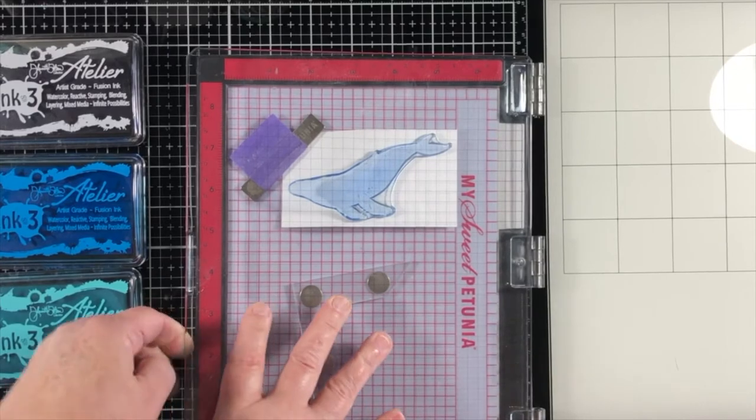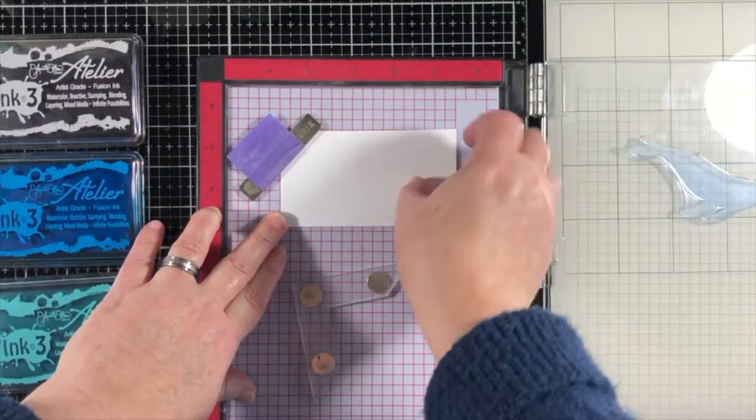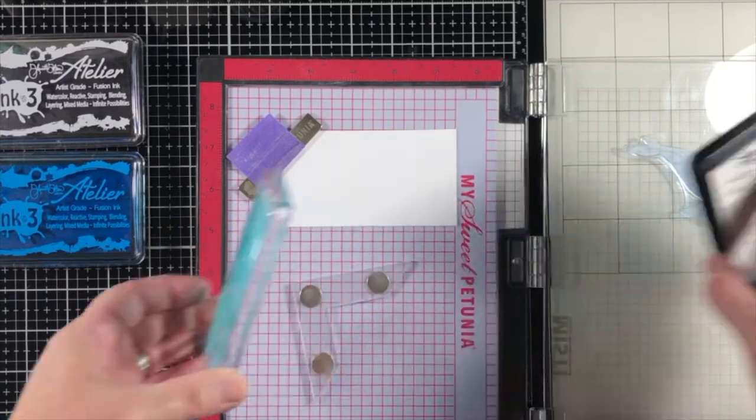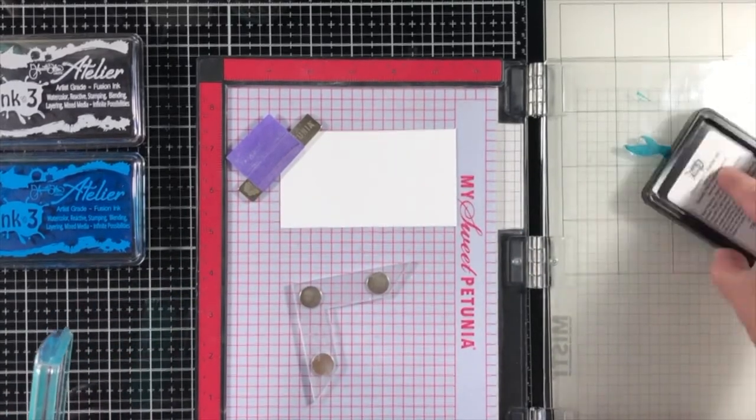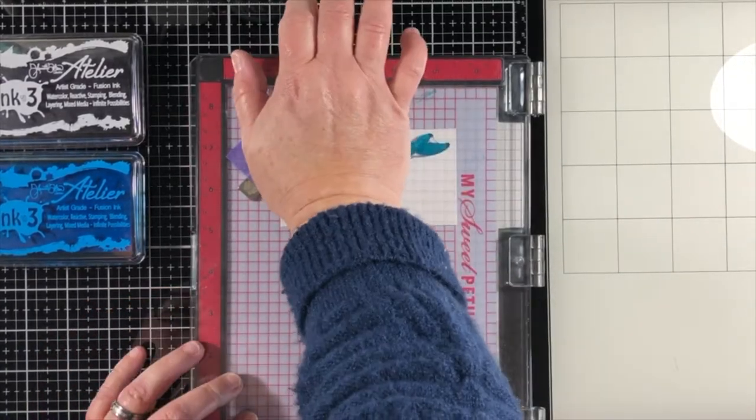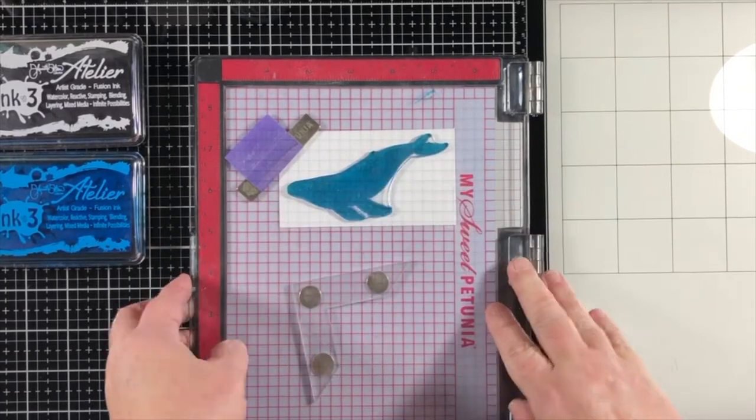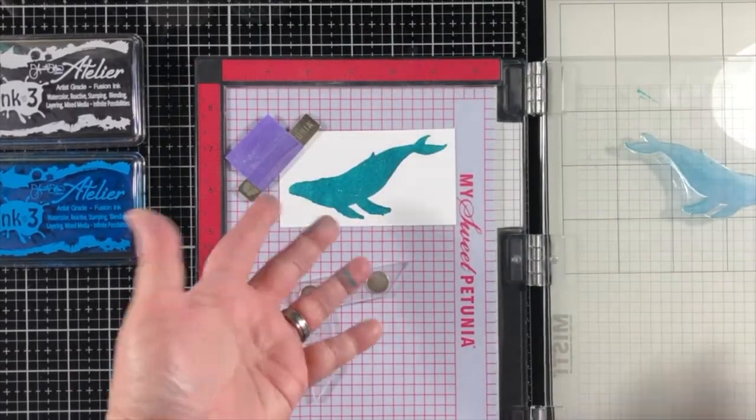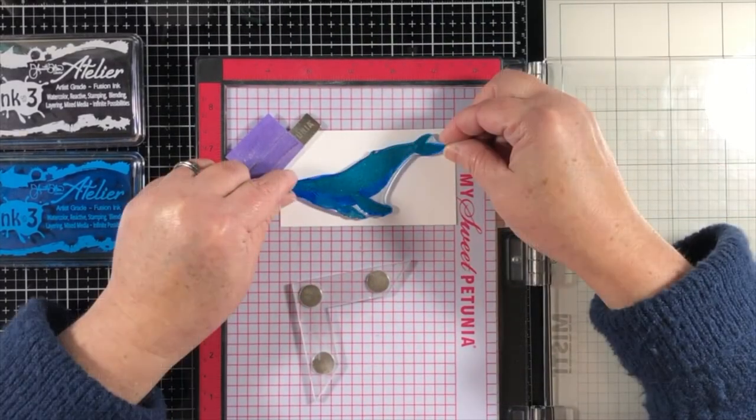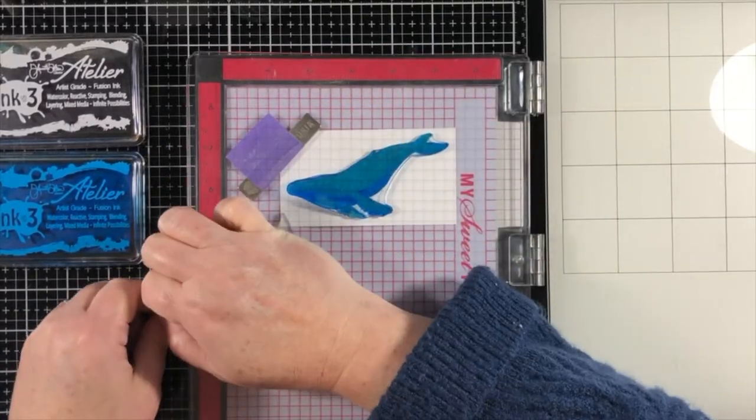So now I've gone back to a piece of 80 pound cardstock, and I'm going to be stamping this whale from Hero Arts. And it's a color layering stamp set. So this video is serving two different technical purposes. We've got some water coloring with ink refills. And then now I'd like to show you how to use layered stamps with the Atelier inks.